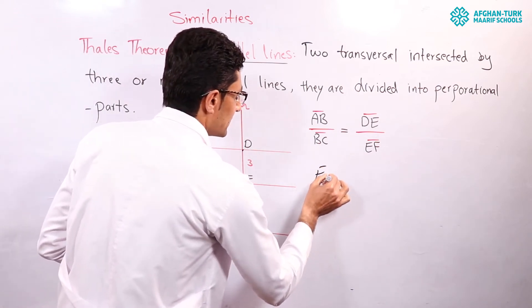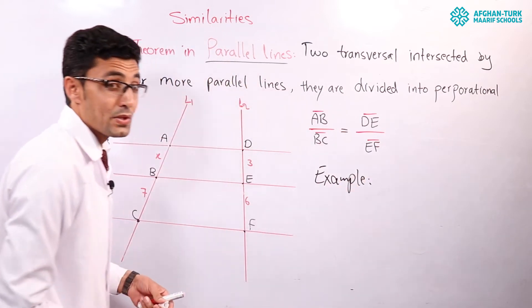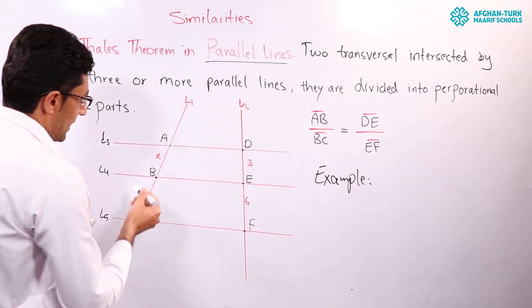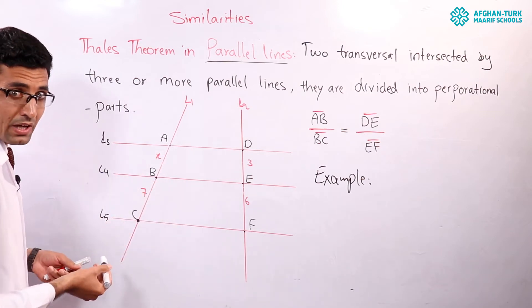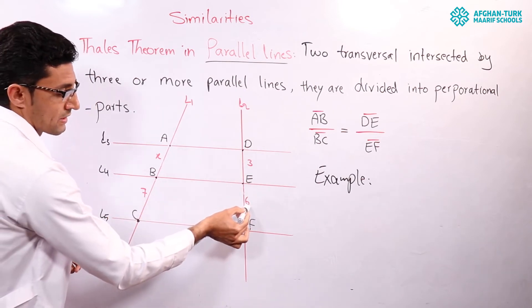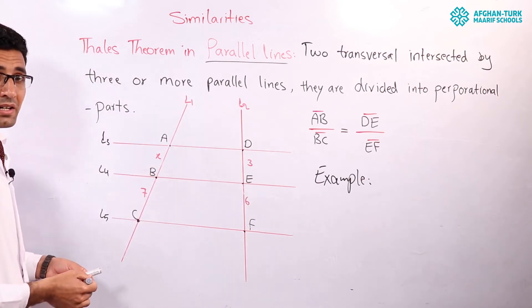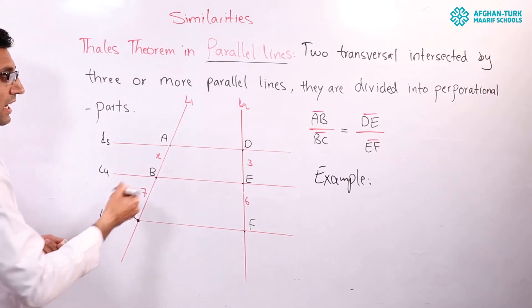If I have an example, let's look at it. I have here the value of X that I should find. X, three, seven, six. By Thales theorem in parallel lines, I can find this X very simply. How?